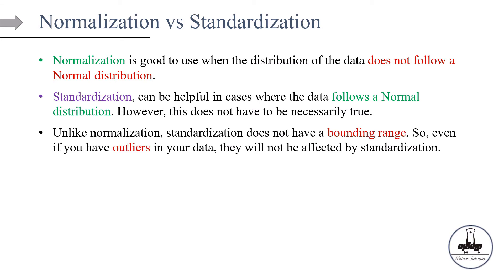Standardization can be useful when the data has a normal distribution, though this isn't strictly required. Unlike normalization, standardization does not have a bounding range — so even if you have outliers, they won't squeeze the rest of the data into a tiny range. In normalization, the min-max formula's denominator is the range, which is heavily impacted by outliers, making their effect more severe than in standardization.